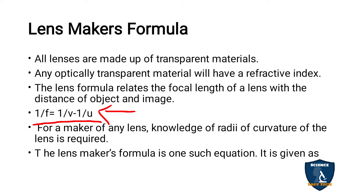Now we are going to look at the Lensmaker's Formula. The Lens Formula was discussed in previous classes. Now, if you are going to make a lens, you need a formula for that. A lens is a transparent material — through its transparency we are able to see the image of a particular object.